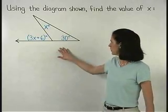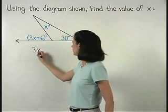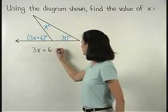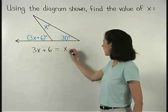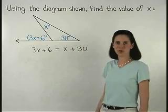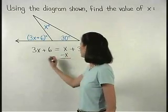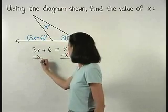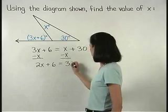So in the diagram shown, the exterior angle, 3x plus 6, equals the sum of the remote interior angles, x plus 30. And solving the equation from here, we subtract x from both sides to get 2x plus 6 equals 30.